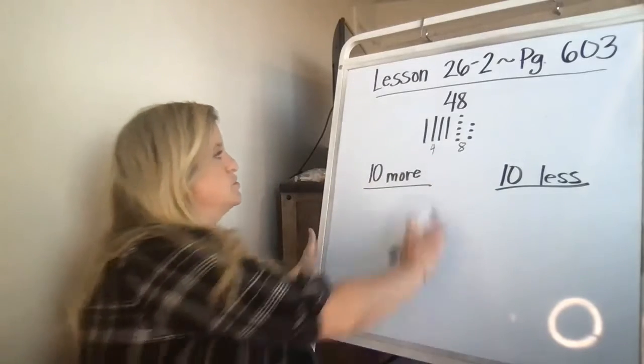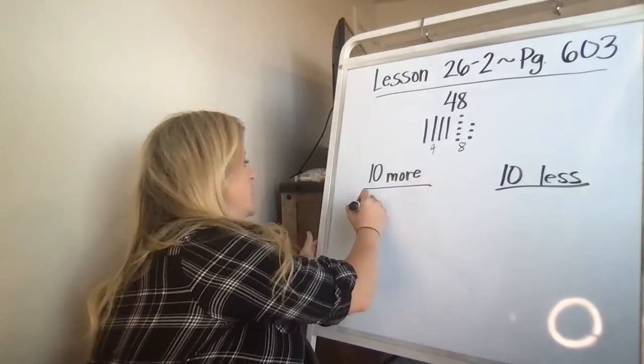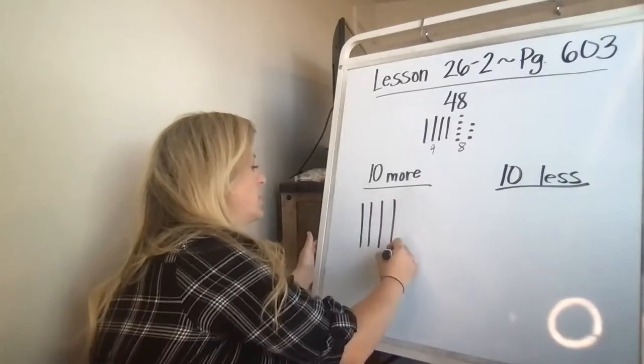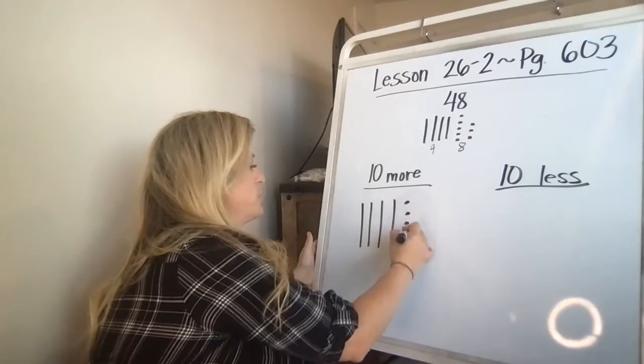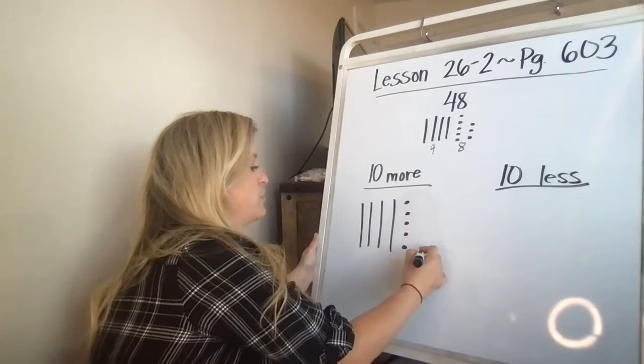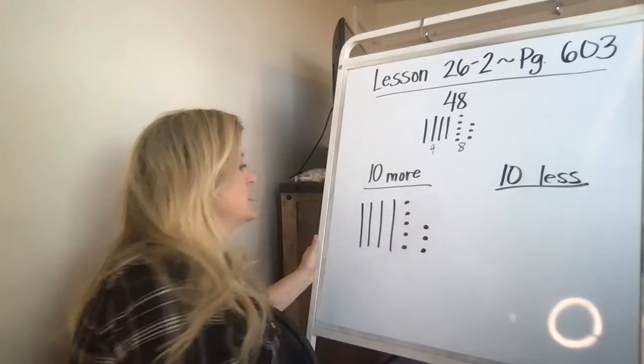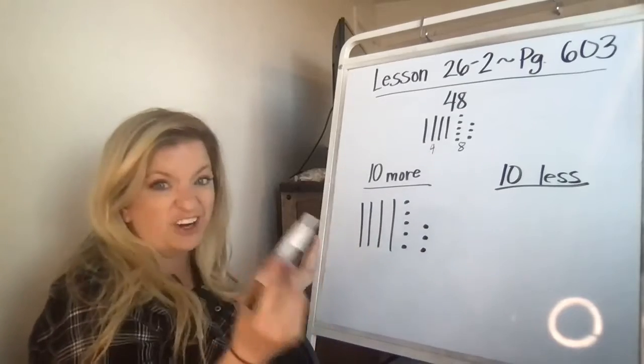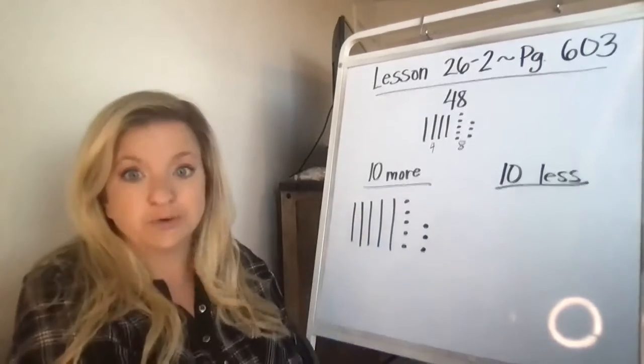So what I think is always good is to do 48, to draw it again. 10, 20, 30, 40, and then 41, 42, 43, 44, 45, 46, 47, 48. 10 more, I'm going to add on another stick of 10. There I go.